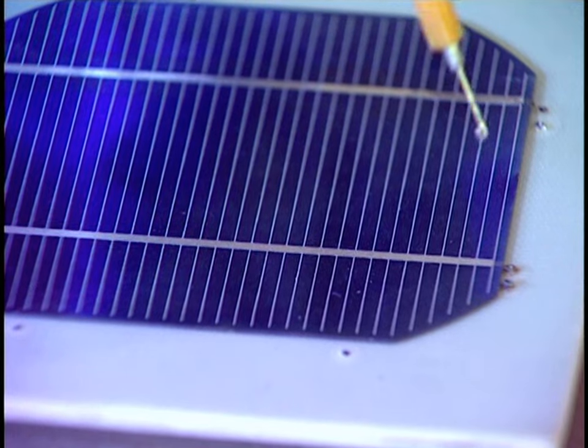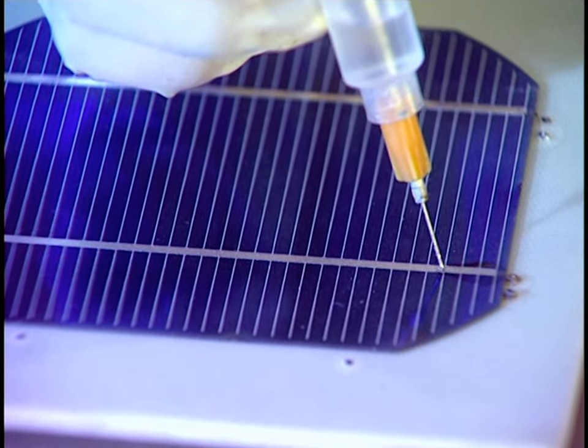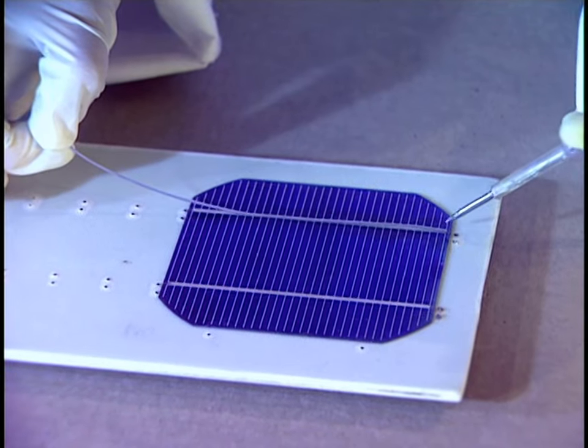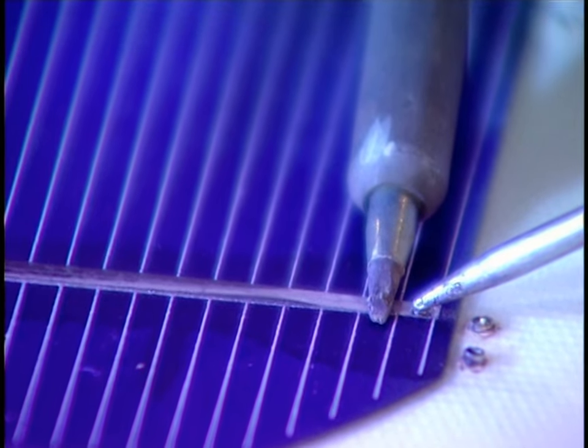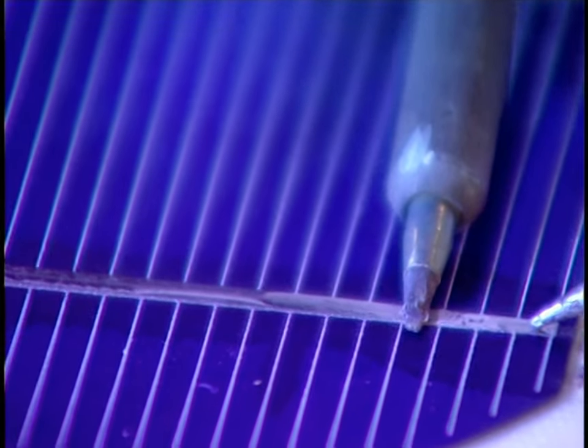To make a solar panel, several modules have to be connected together. Then they apply a soldering flux on each module. The soldering wire is heated with an iron.